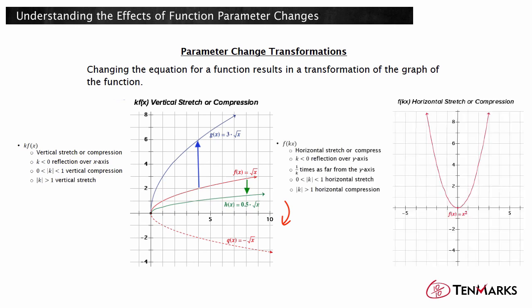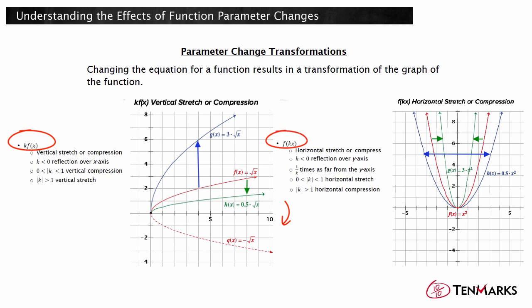f of the quantity k times x will result in a horizontal stretch or compression of f. When k is negative, it also results in a reflection over the y-axis. The graph is stretched so that each point is 1 over k times as far from the y-axis as its corresponding point in f. When the absolute value of k is between 0 and 1, it is a horizontal stretch, and when the absolute value of k is greater than 1, it is a horizontal compression. If the k value is multiplied by the function value, it is a vertical stretch or compression; if the k value is multiplied by the x inside the parentheses, it is a horizontal stretch or compression.